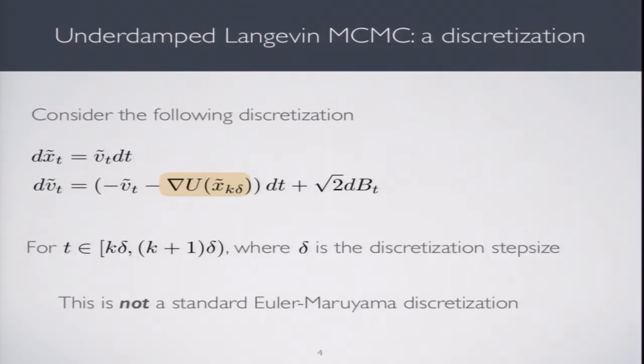That was the stochastic differential equation, which is not implementable in practice. To get an MCMC algorithm, you need to discretize the differential equation. The discretization is represented as this stochastic process. The only difference is in the gradient u term. For exact diffusion, we'd have ∇u of x_t. But in the discretization we have ∇u of x_{k·δ}, where δ is step size and k·δ is the time of the last discrete time step. There's a lag between the true gradient and the discretized gradient.